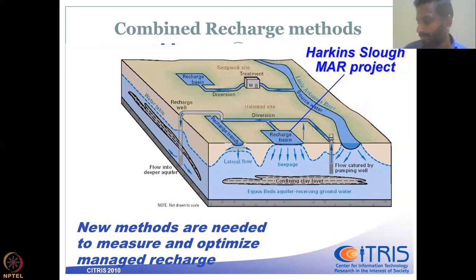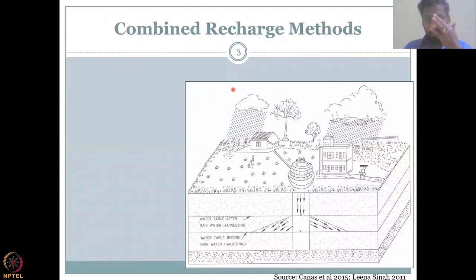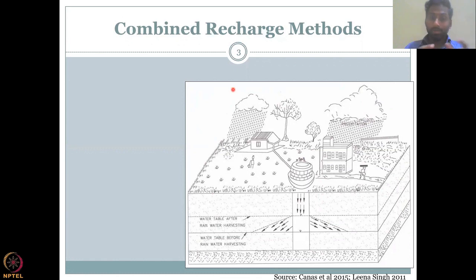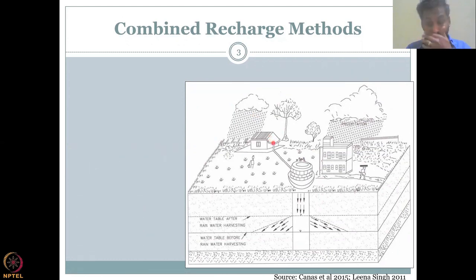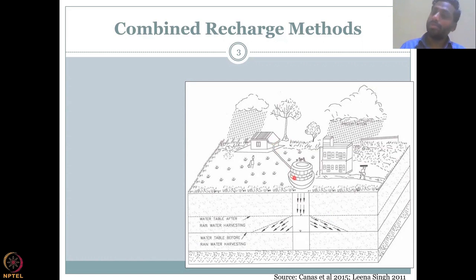Let's look at one more method before we jump into the government recommendations. In the combined recharge methods, it need not be only direct and indirect methods combined — it can also be within the direct methods. For example, rainfall is being harvested and captured on the rooftop and then routed through a canal into a dug well. Once it gets into the dug well, water is being recharged. Also, along the canal, there could be water recharge helping the groundwater recharge in the network.